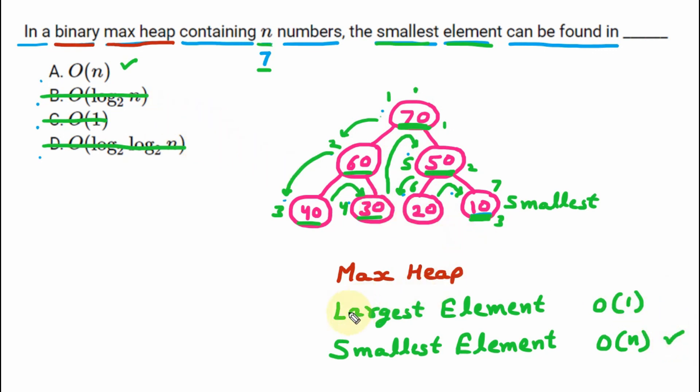Or if you want to find the largest number, it is always on the top. So there will be big O of 1. So for this question, we have the correct answer that is big O of n for the smallest number in max heap.